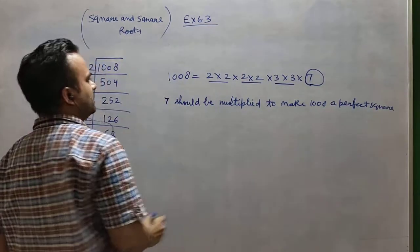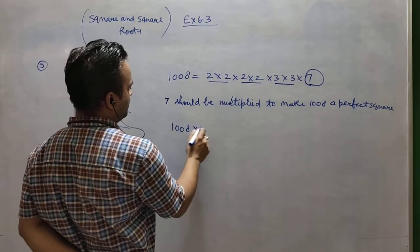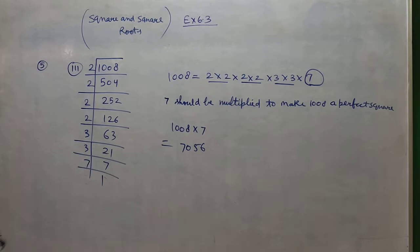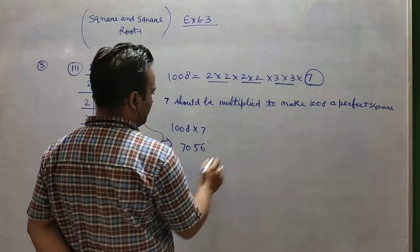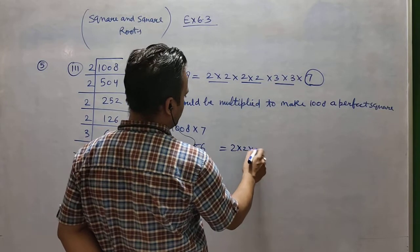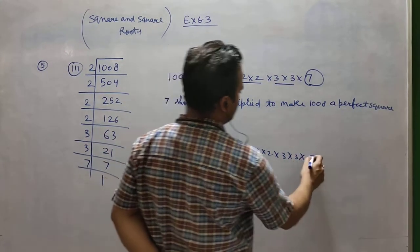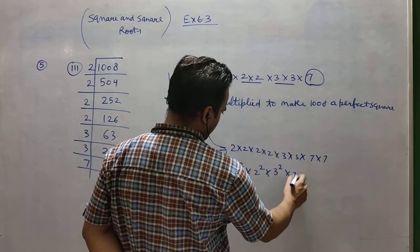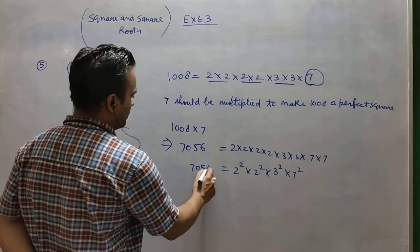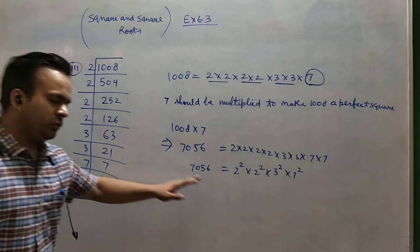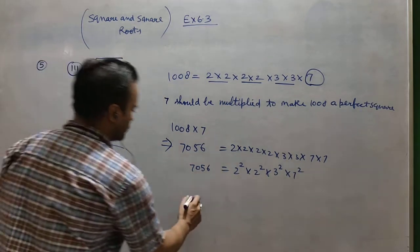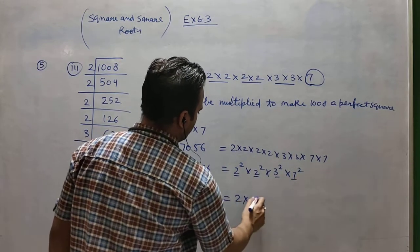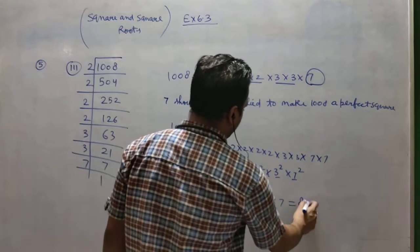After multiplying, the result is 7056. Looking at the factors of 7056, we get 2×2, 2×2, 2×2, 3×3, and 7×7 — so it is in square form. The square root of this perfect square is 2×2×3×7, which equals 84.